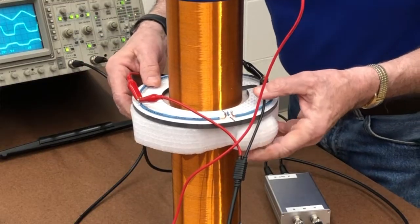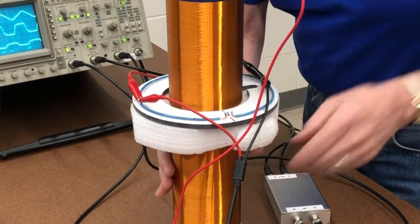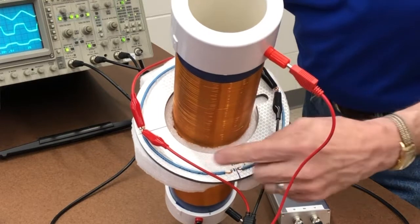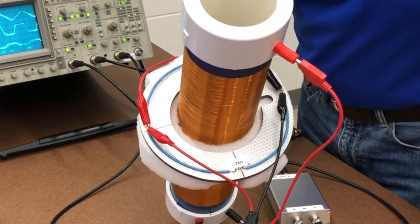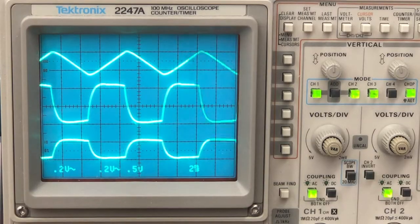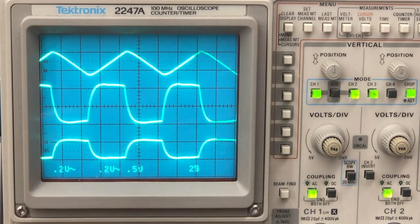Now keep in mind that what I have here are the red lead and the black lead from both channels going to the same point. Let's look at the scope trace a little closer.